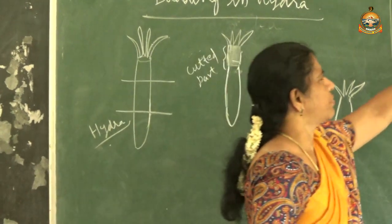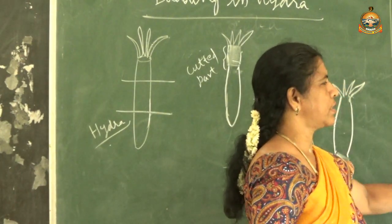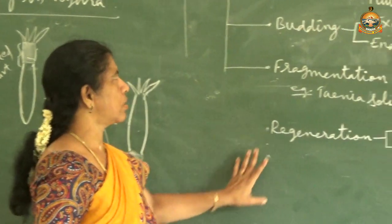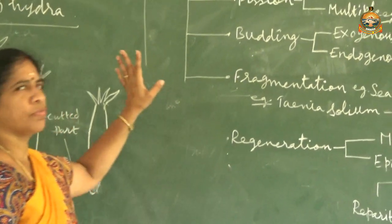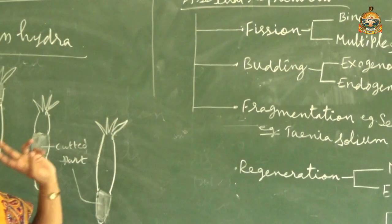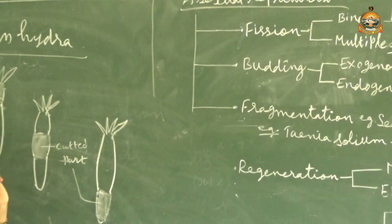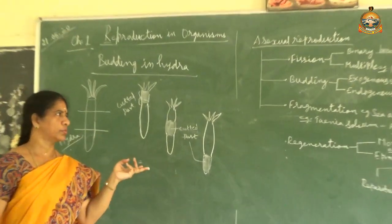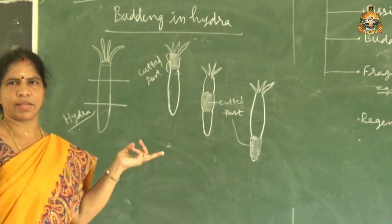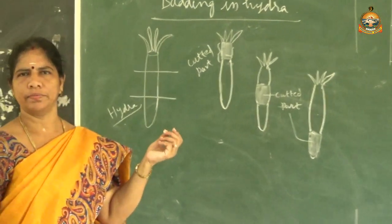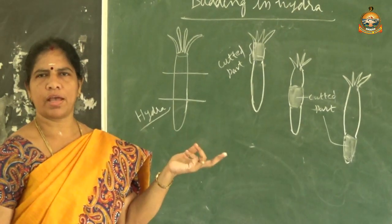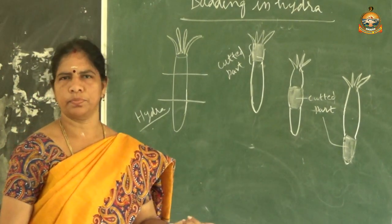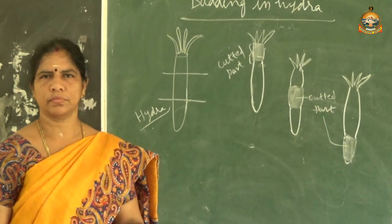So fission, budding, fragmentation, and regeneration are all the types of asexual reproduction. I hope you understood clearly. If you have any doubts, you can ask me.